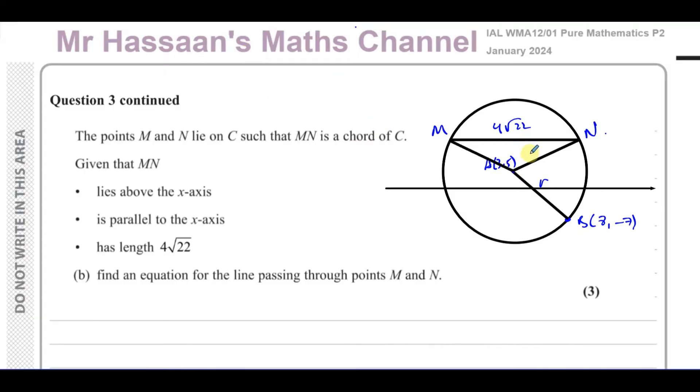So we have this triangle here where the two radii from the center to M and N are both 13. And we want to find the equation of the line passing through the points M and N.